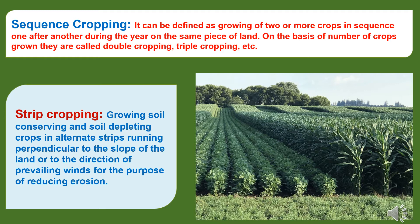Now we will study about strip cropping — growing soil-conserving and soil-depleting crops in alternate strips running perpendicular to the slope of the land or to the direction of prevailing winds, for the purpose of reducing erosion. Strip cropping is mainly focused on controlling erosion.